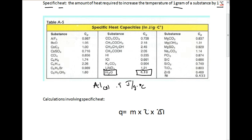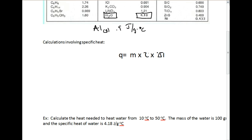Now we're going to get into calculations involving specific heat. There's a formula that we use: Q equals m times C times delta T. Let's talk about what each one of these variables represent.